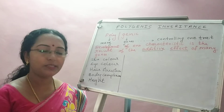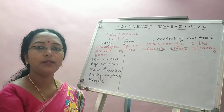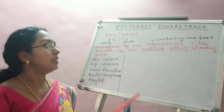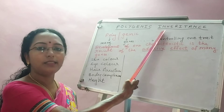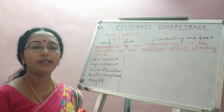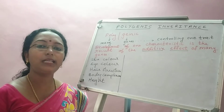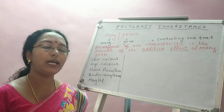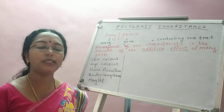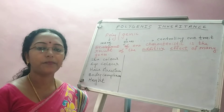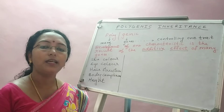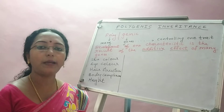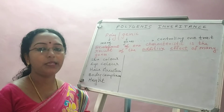Hi, welcome to a new session. Today we shall deal with another concept of deviation from Mendelian genetics: the concept of polygenic inheritance. In the previous session we dealt with the aspect of pleiotropy. If you haven't gone through that, please subscribe to the channel so that you won't miss future sessions. In pleiotropy we learned that one gene shows many effects, with the classic example of the disease phenylketonuria — one gene, many effects.